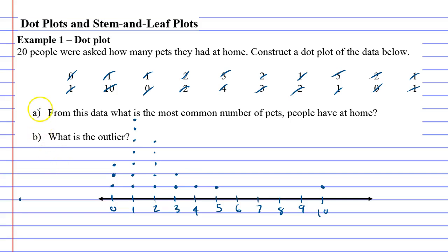Okay, now they've got a couple of questions. Question a: from this data, what is the most common number of pets people have at home? It looks like most people have one pet at home, and you can see that because it's the column of dots that goes the highest.